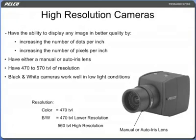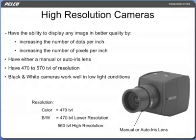High resolution cameras have the ability to display any image in better quality by increasing the number of dots per inch or pixels per inch. High resolution cameras have either a manual or auto iris lens and have 470 to 570 TVL of resolution. High resolution black and white cameras work well in low light conditions.